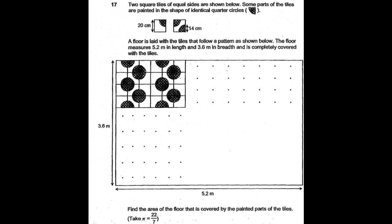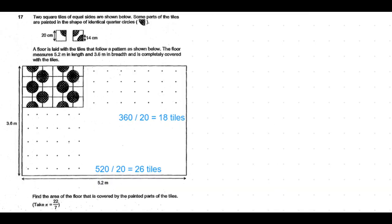The second thing is each tile is 20 centimeters by 20 centimeters, a square tile. So we need to find out how many square tiles can be fit into this floor area. Along the breadth, 360 divided by 20, so total 18 tiles can be fit. And along the length, 520 divided by 20, which is 26 tiles.